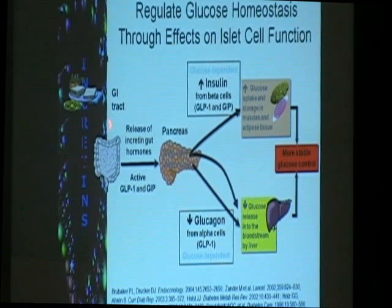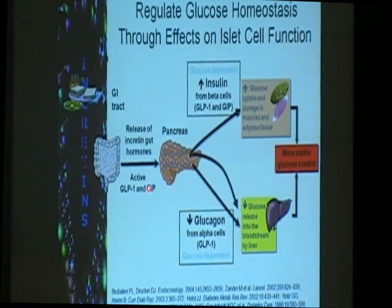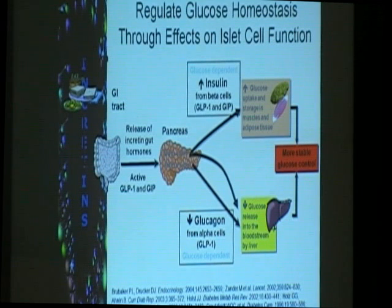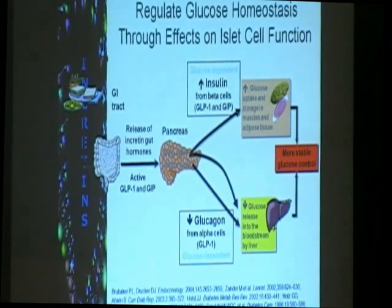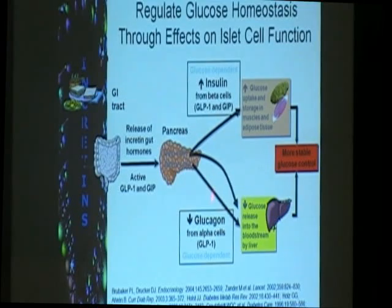To put that in picture — as we eat, food will go through our gastrointestinal tract, and there will be release of our incretins. Distally you have GLP-1, and proximally the GIP. Since they have receptors in the pancreas, they will affect the beta cells as well as the alpha cells. Their actions are glucose-dependent, so they act depending on the level of blood sugar. The beta cells will be stimulated to produce more insulin, and the alpha cells will be stimulated to suppress glucose production.